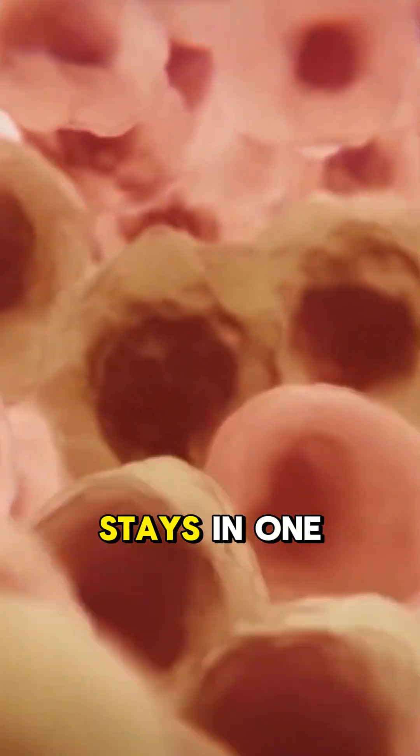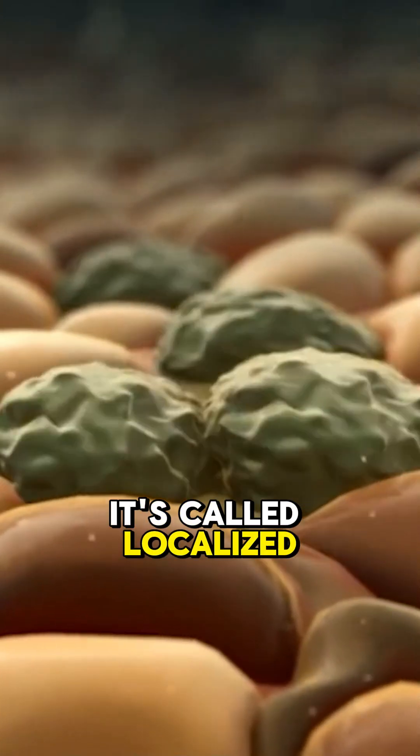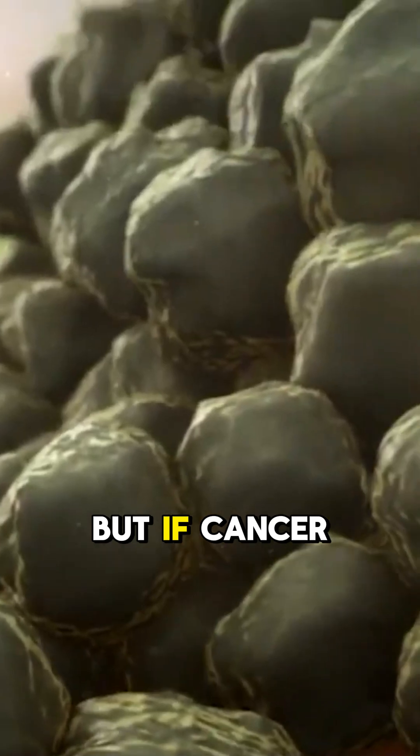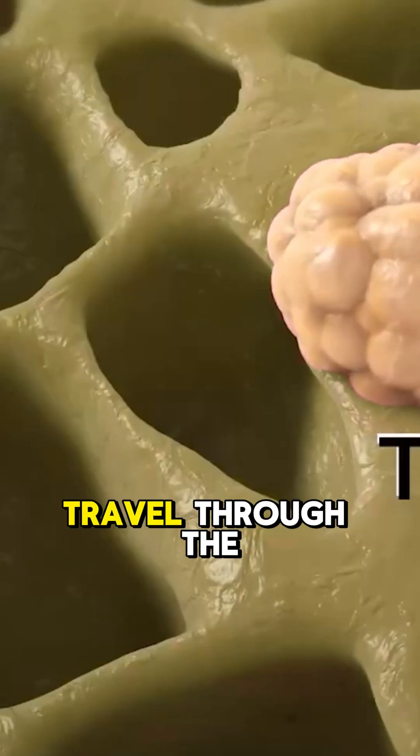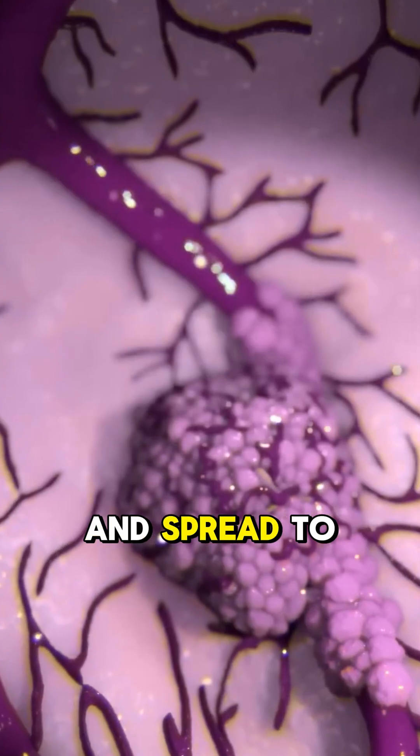If this tumor stays in one place, it's called localized cancer. But if cancer cells break off, travel through the blood or lymph, and spread to other parts, that's called metastasis.